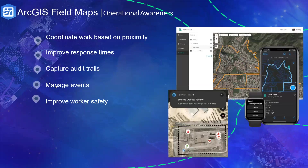Finally, there's operational awareness — a capability that provides situational awareness whether you're in the field or in the office. You can create geofences so mobile workers receive location alerts. For example, if you're sending people to an area with flooding and you want them notified when entering or leaving that zone, you can create geofences for this. Workers will be alerted when approaching hazardous areas — whether it's floods, storms, or insecurity — whether they're indoors or outdoors.